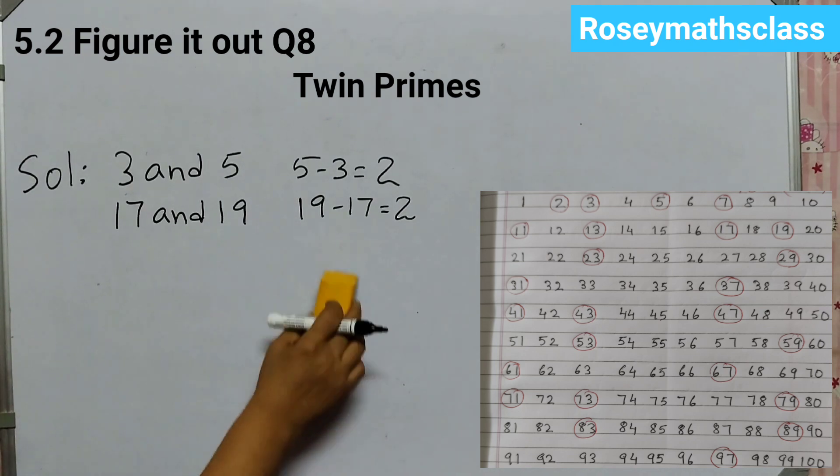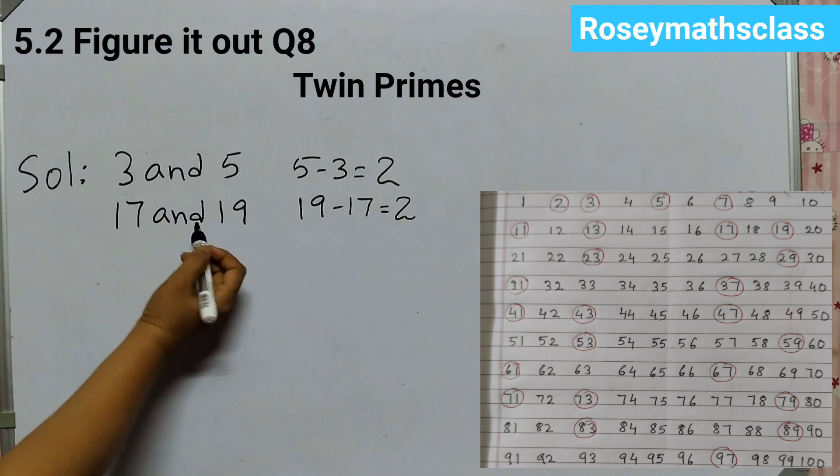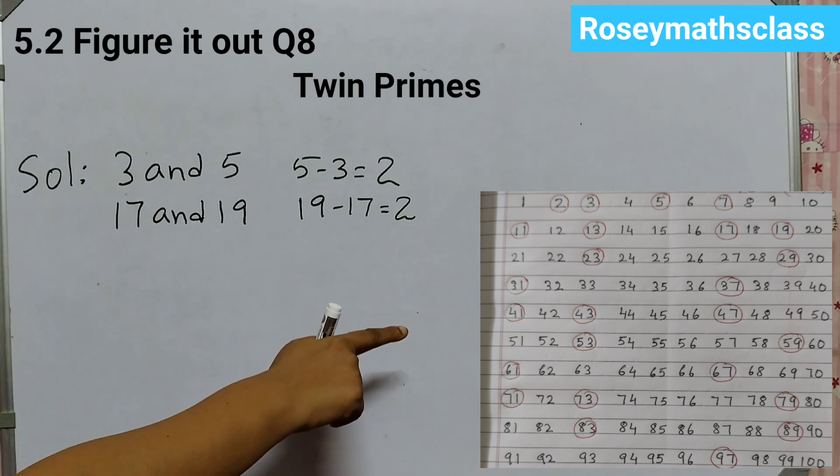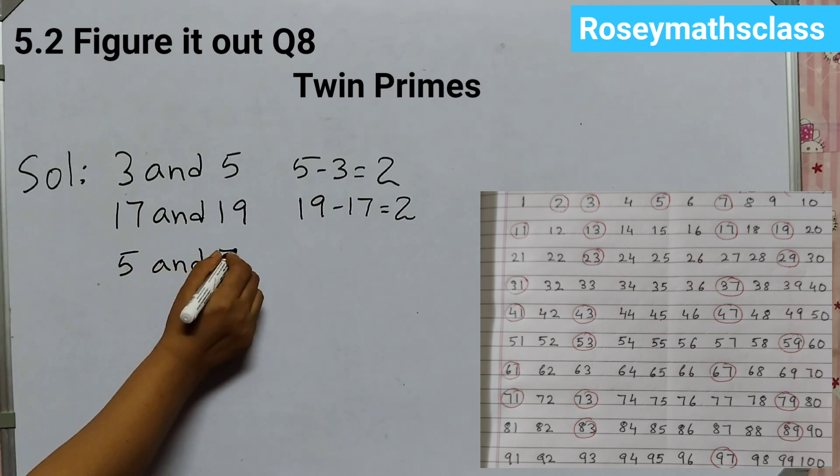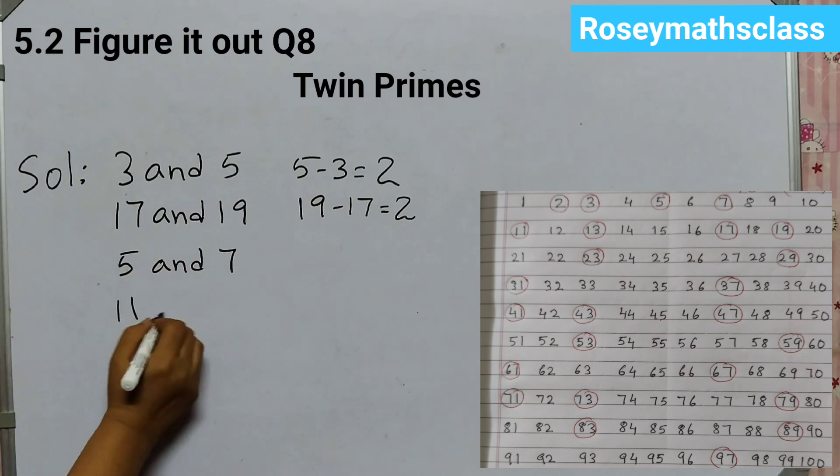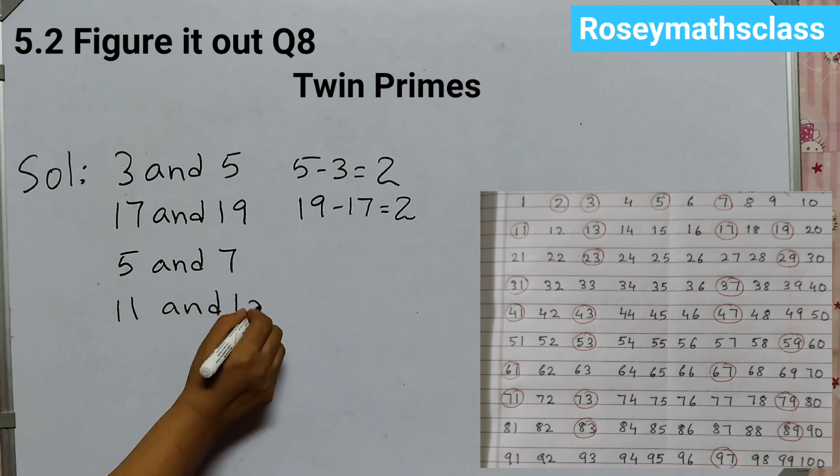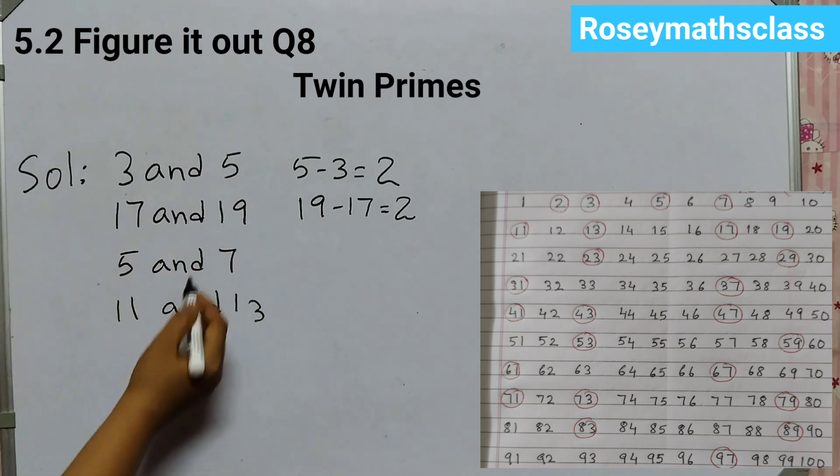So let's do that. So first one is 3 and 5. You can see this table for reference. So after 3 and 5, we have 5 and 7. Next is 11 and 13. 17 and 19 is already there.